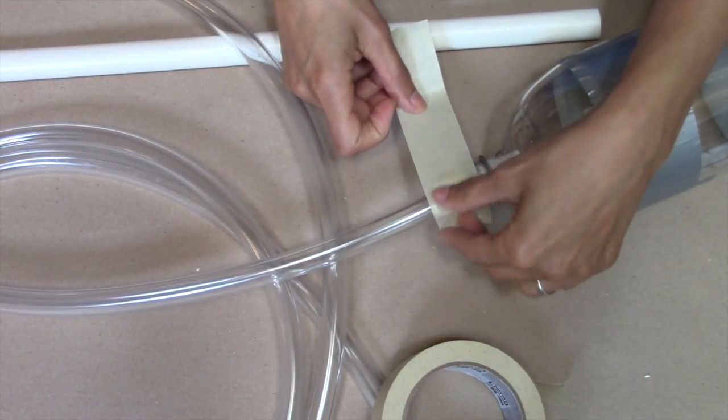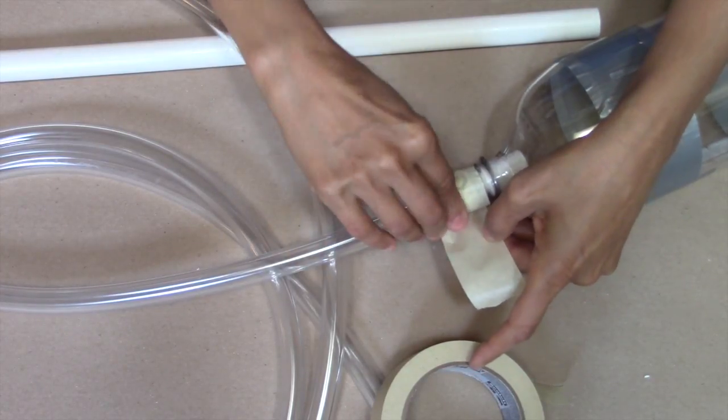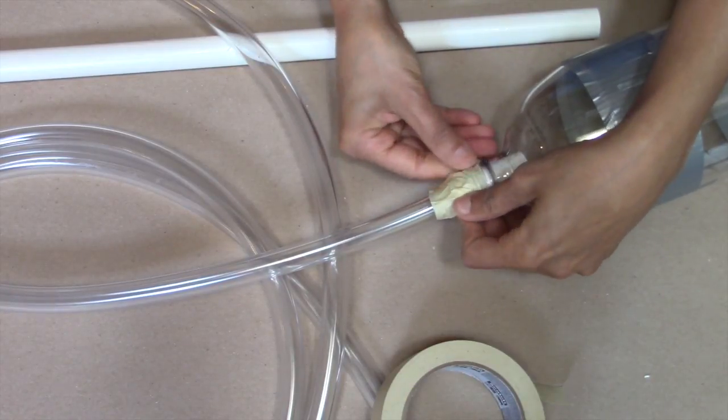I'm going to do the same thing with a layer of duct tape. The reason I use masking tape first is because I know the bottle will be good for a limited number of stomps before it starts to crack.